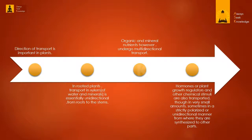Hormones, or plant growth regulators, and other chemical stimuli are also transported, though in very small amounts, sometimes in a strictly polarized or unidirectional manner from where they are synthesized to other parts.